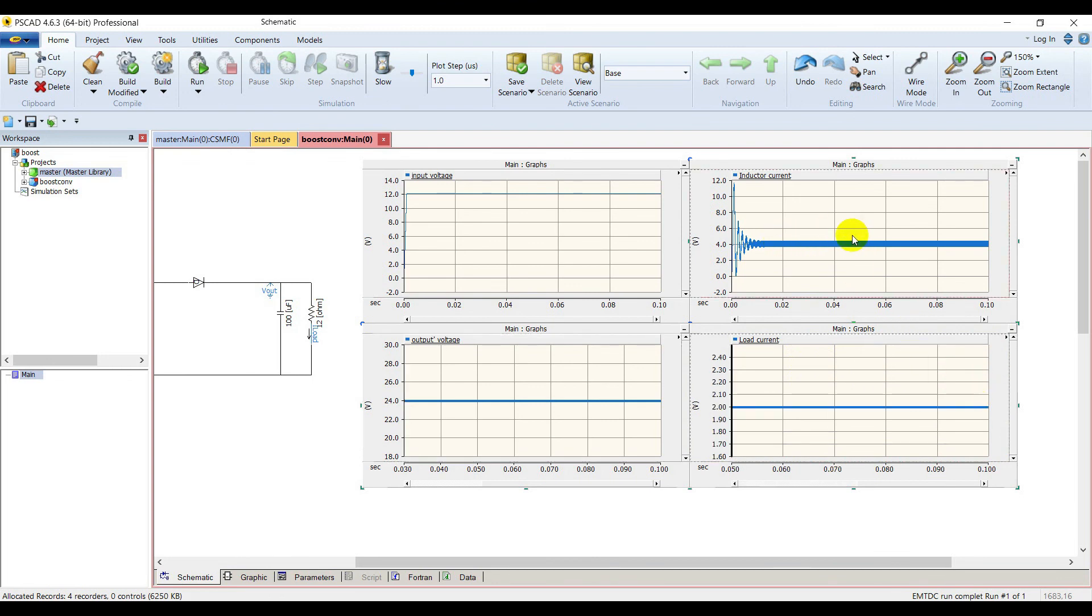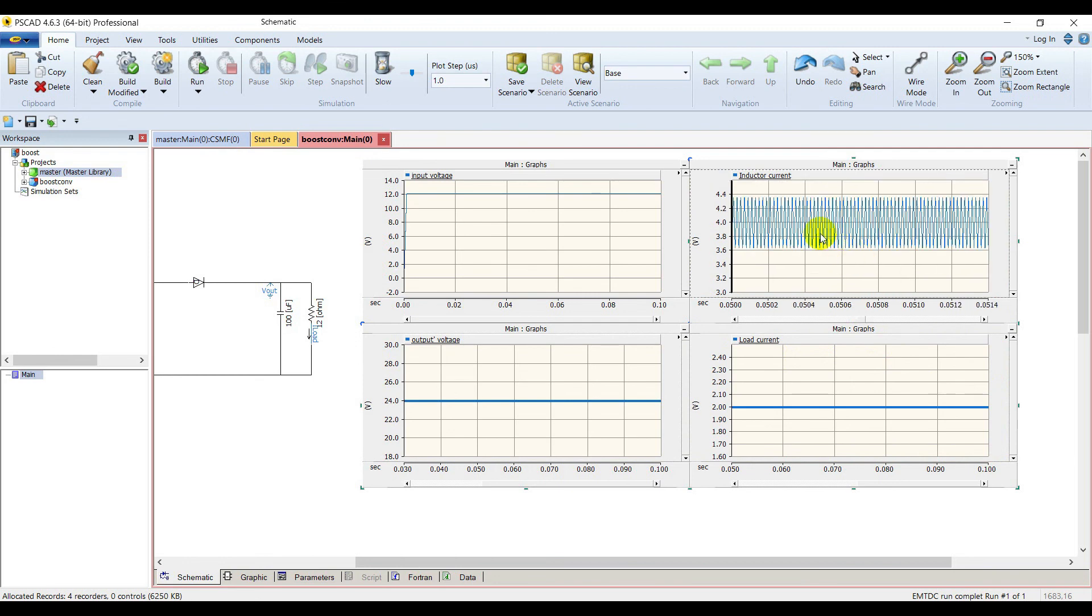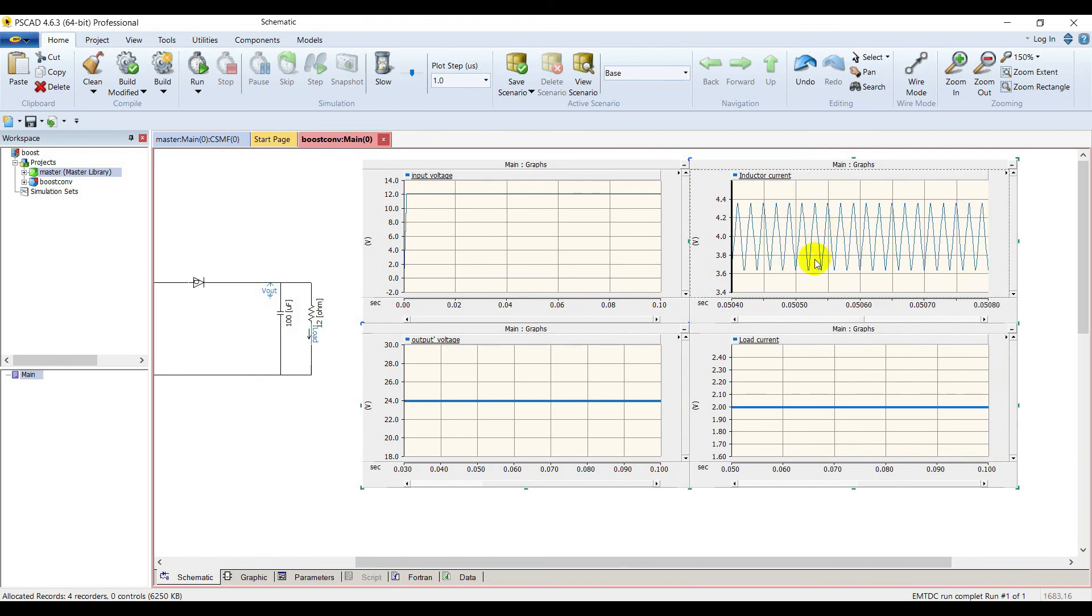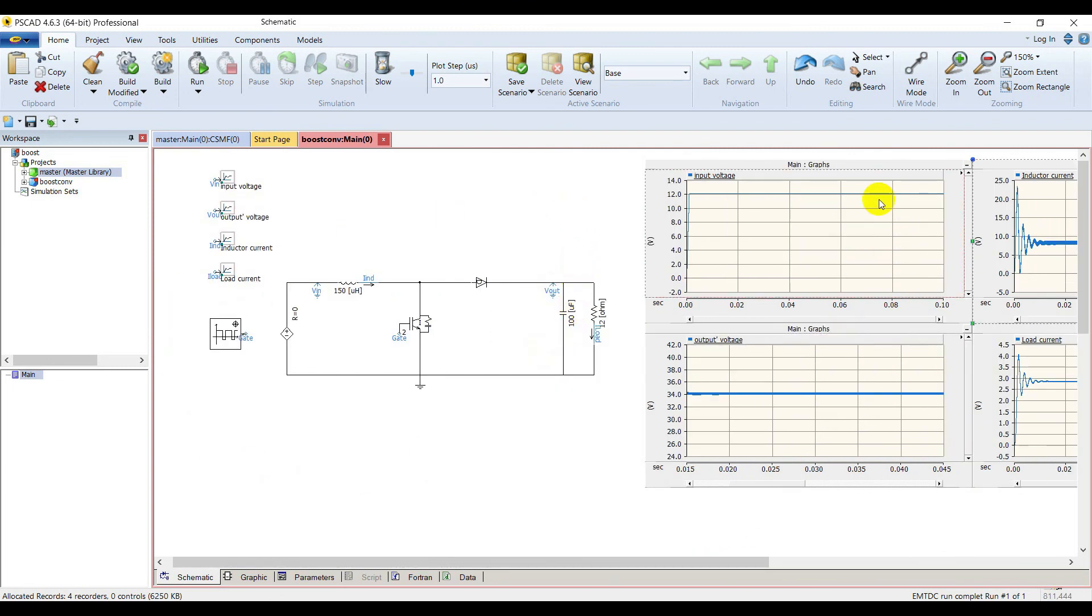The inductor current has some ripple. You can zoom in and see the ripple. This is the ripple in inductor current. So that's all for boost converter. See you in the next session. Thank you.